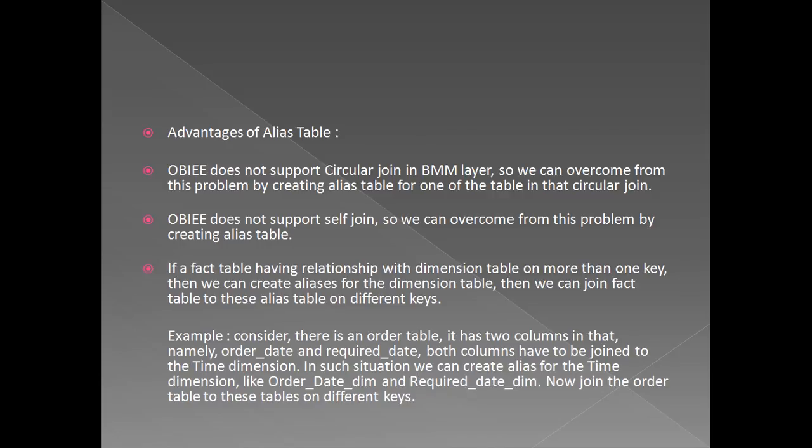If a fact table has a relationship with a dimension table on more than one key, then we can create aliases for the dimension table and join the fact table to these alias tables on different keys. For example, consider there is an order table with two columns, namely order_date and required_date, and both columns have to be joined to the time dimension. In such a situation, we can create aliases for the time dimension like order_date_dim and required_date_dim, then join the order table to these tables on different keys.